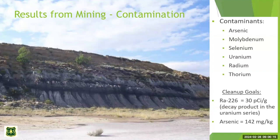Resulting from mining, we have contamination. The contaminants at the site are arsenic, molybdenum, selenium, uranium, radium, and thorium. We've done a risk assessment and determined our cleanup goals are 30 picocuries per gram for radium-226 and 142 milligrams per kilogram for arsenic. If we address those two contaminants, we will also be addressing the other contaminants at the site at the same time.